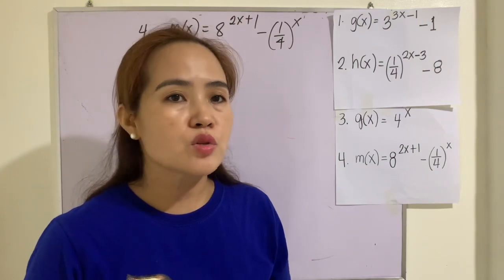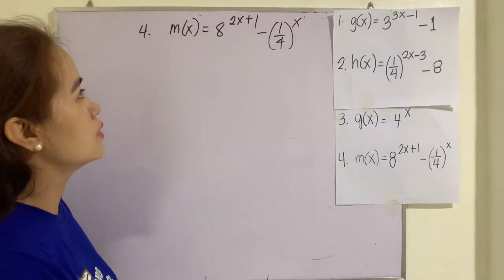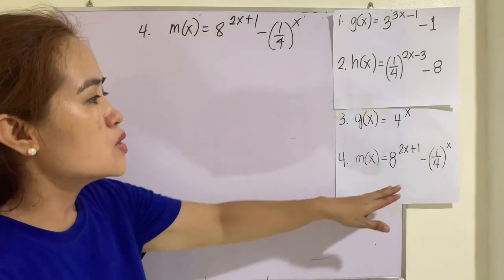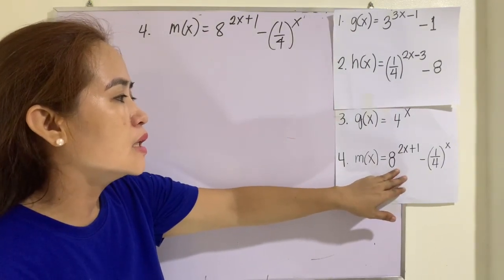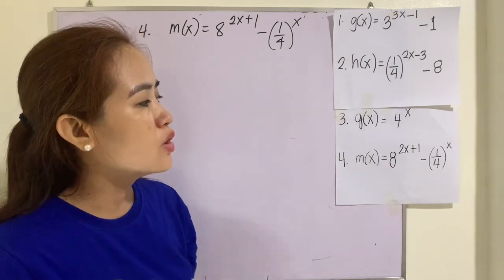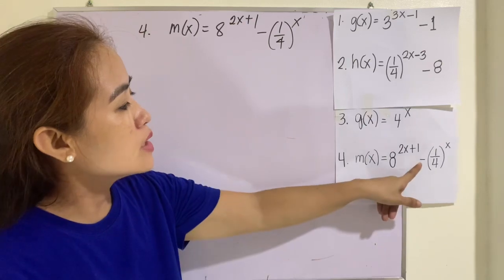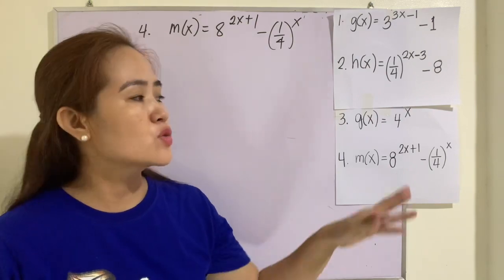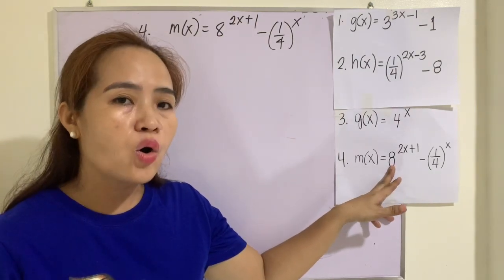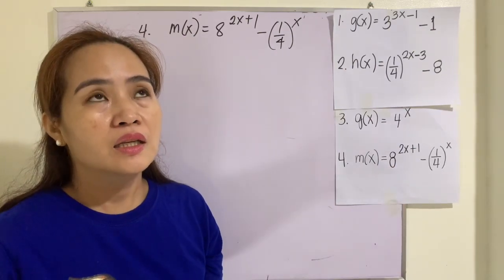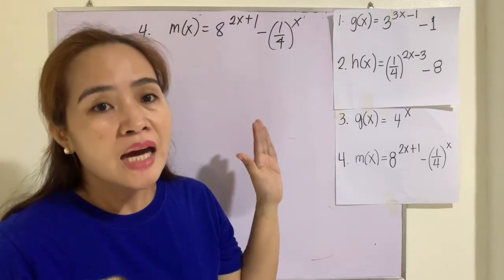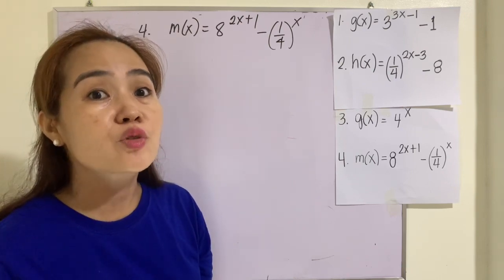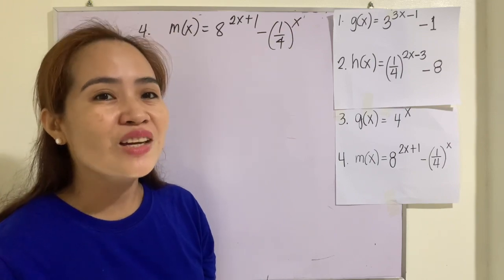For the horizontal asymptote of m of x equals 8 raised to (2x plus 1) minus (1/4) raised to x: we cannot identify whether this is purely increasing or decreasing — it is a combination of both. There is no horizontal asymptote, because when graphed, this function covers all x values from negative infinity to positive infinity, and all y values from negative infinity to positive infinity.